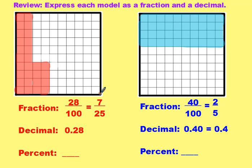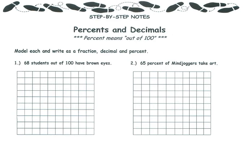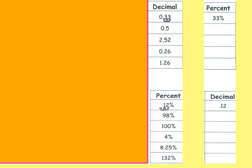Looking back at our models, we know that 28 out of 100 is the same as 28 hundredths, and that is also equivalent to 28%. 40 out of 100 were shaded, so 40 hundredths or 4 tenths, which is equivalent to 40%. You can move your decimal two places to the right to go from decimal to percent, and add the percent sign.